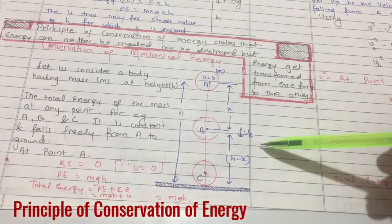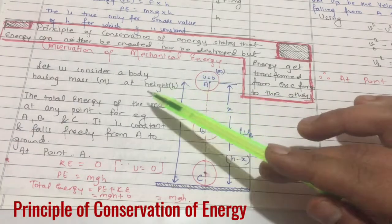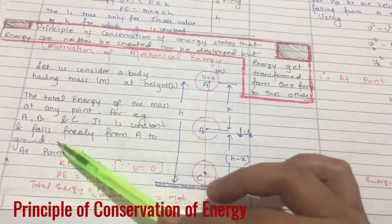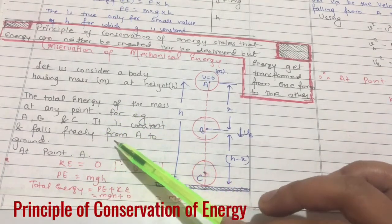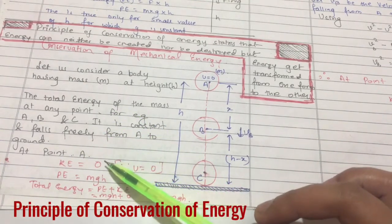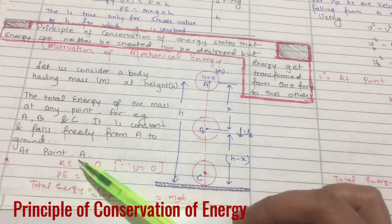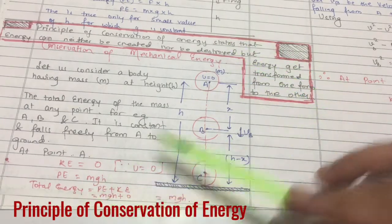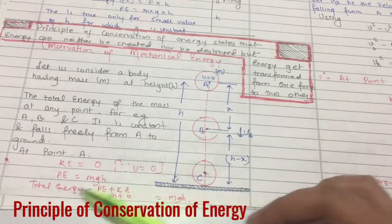Let us consider a body having mass m at height h. The total energy of the mass at any point, for example A, B, and C, is constant and falling freely from A to the ground. At point A, kinetic energy is always zero, so potential energy is m into g into h and this is the total energy, that is mgh.